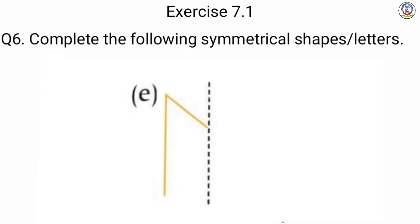Next is E — we have a figure with one slant line and one straight line. In the other part we draw the same — one slant line and one straight line — so it becomes alphabet M. हम लोग का alphabet M बन गया.